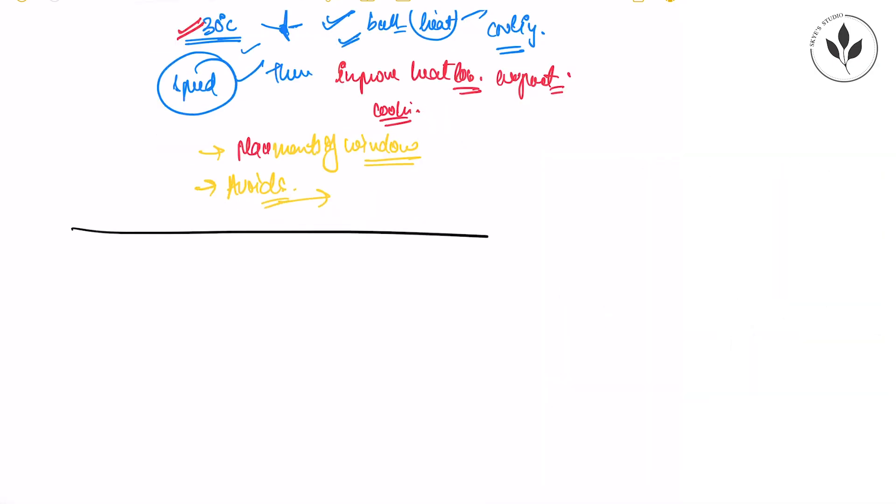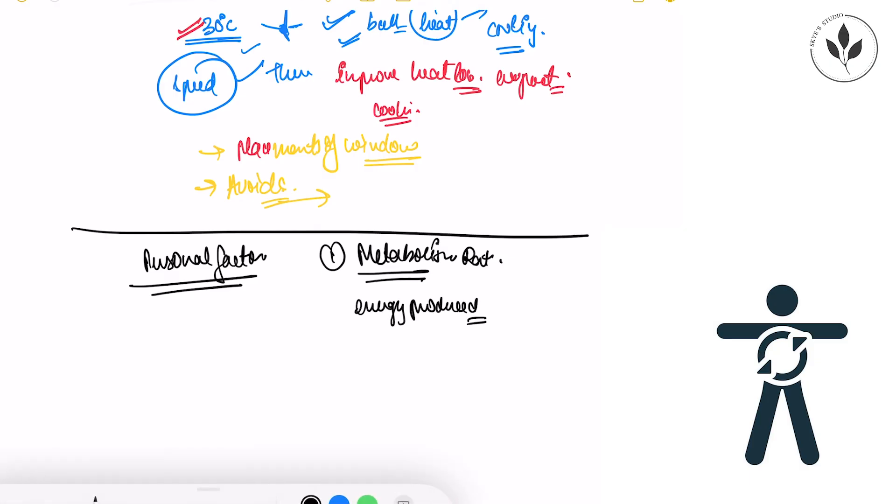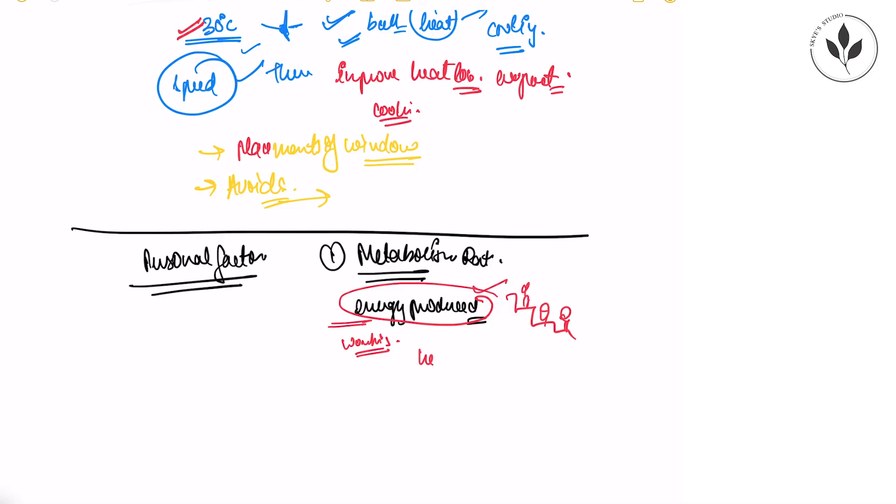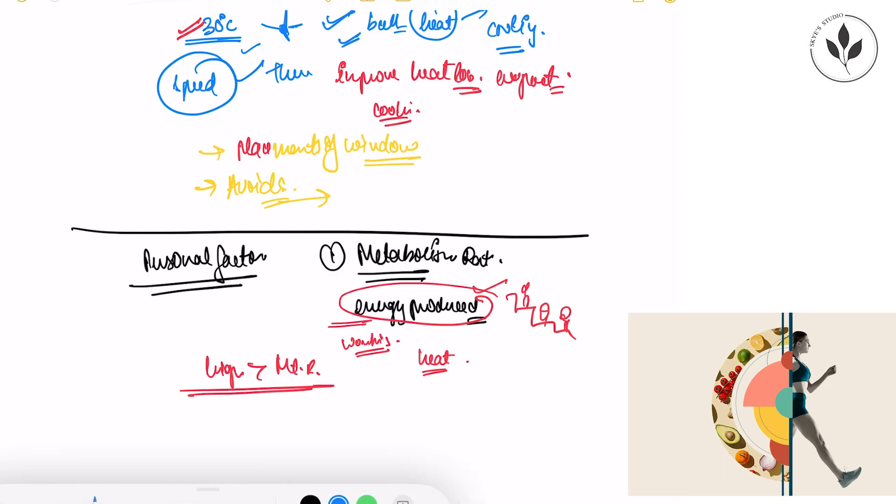The second types of factors are your personal factors. And the very important one is metabolism of a human being. Now what is metabolism? Metabolism rate is basically the energy produced in your body through physical activities. Now when you do exercise or maybe when you are walking all up on the stairs you feel sweaty. Why? Because you are producing energy by working out your muscles. So when you are working out energy is being produced and the more energy is produced the more heat is produced according to that. That means higher your activity higher will be the metabolism rate.